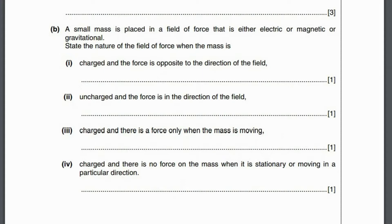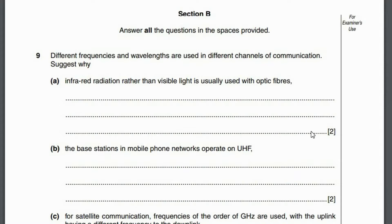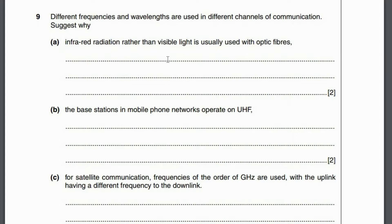Infrared radiation rather than visible light is usually used in optical fibres because infrared has less attenuation per unit length due to its longer wavelength. This means the signal needs to be amplified less frequently, allowing longer uninterrupted lengths of fibre optic cable.